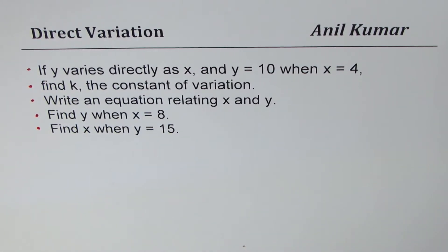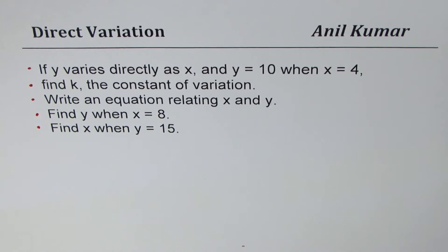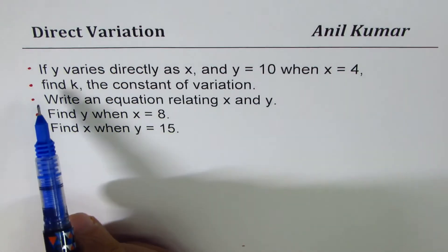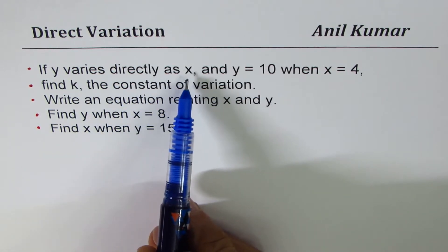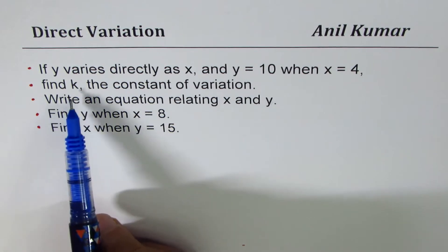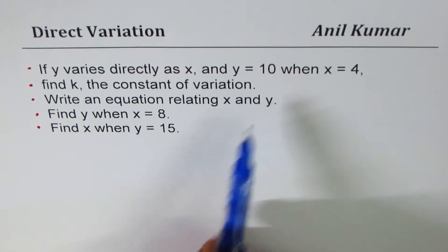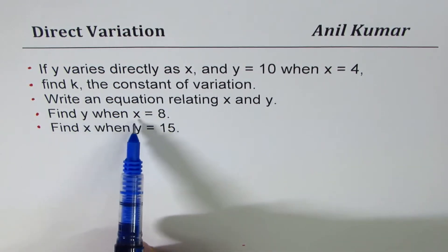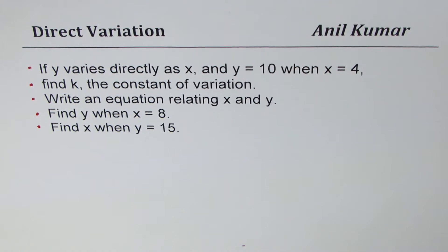I am Anil Kumar and in this video we will practice questions involving direct variation. The question is: if y varies directly as x and y equals 10 when x equals 4, find k the constant of variation, write an equation relating x and y, find y when x equals 8, and find x when y equals 15. You can always pause the video, answer the question, and then look into my suggestions.